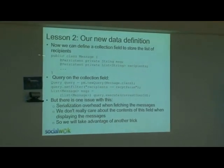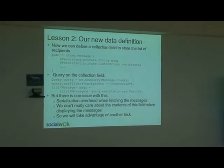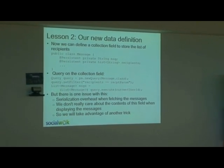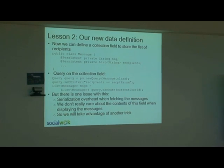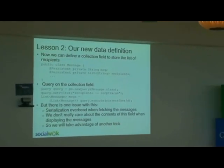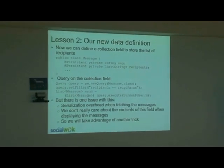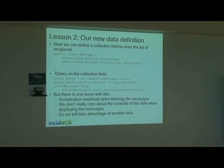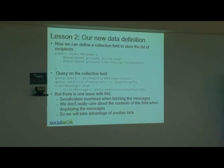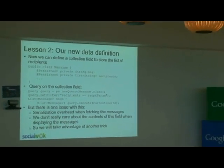Let's change our data definition and actually use this. I have a list of strings, which are basically the keys of my recipients. Then all I need to do is execute a very simple query that checks the recipients for those messages. But there's one problem: to create this list every time, the App Engine datastore has to serialize this data. In App Engine's big distributed datastore, the data is stored in a way that makes it scale across hundreds and thousands of computers. So every time it sends the data back, it needs to reassemble it — but I don't really need this data displayed; I just want to query on it.